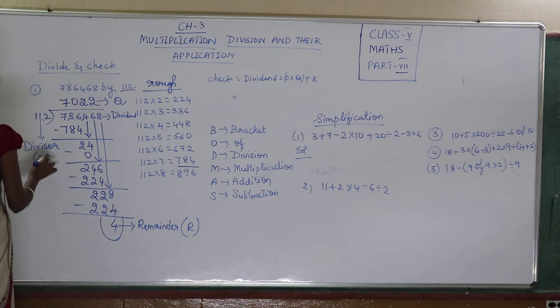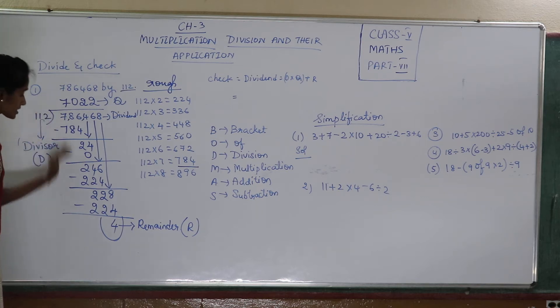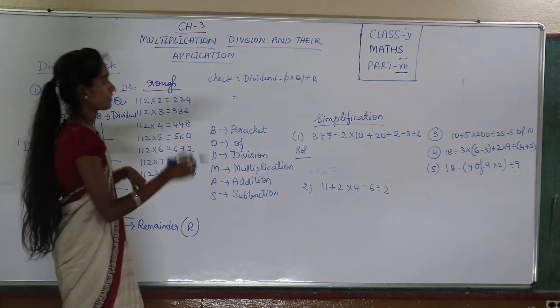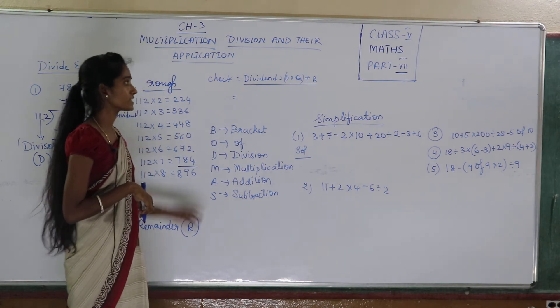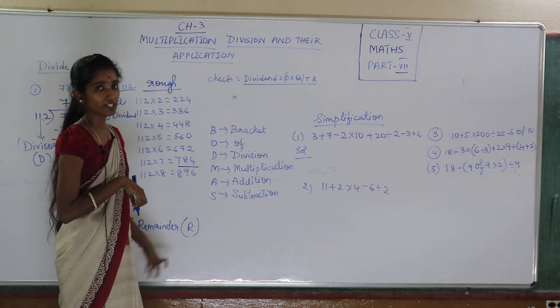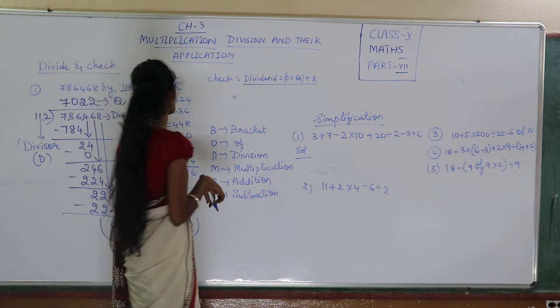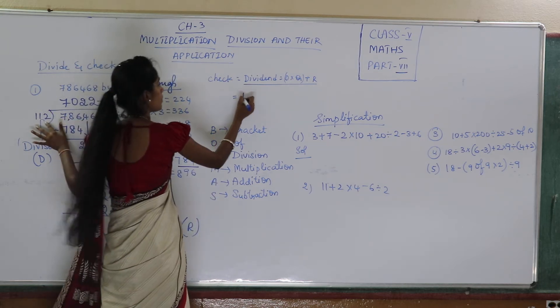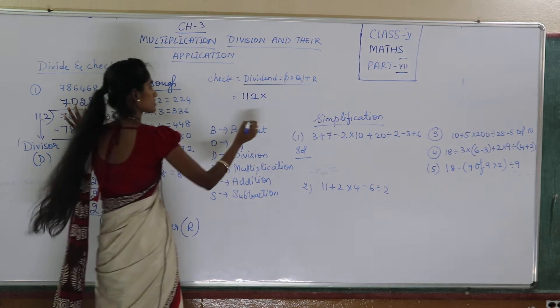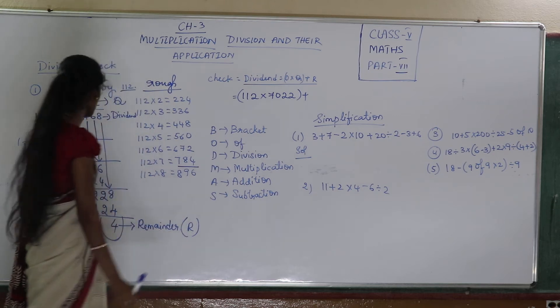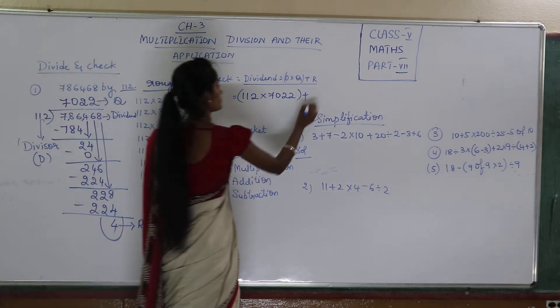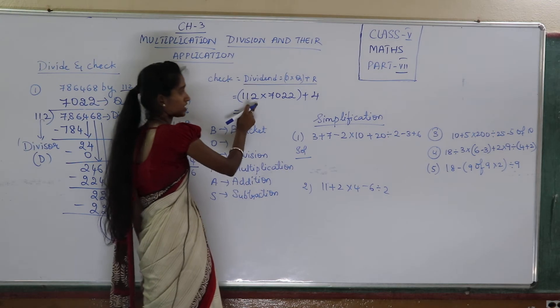Now we have to check whether the different answer which you got, the quotient which you got is correct or not. I will check my division. How do I check? Now see. We have a problem, this formula. Dividend is equal to divisor into quotient plus my remainder. So which is my divisor here? 112. Now which is my quotient here? 7022. Plus my remainder's value of 4. Now what I have to do? Multiplication.